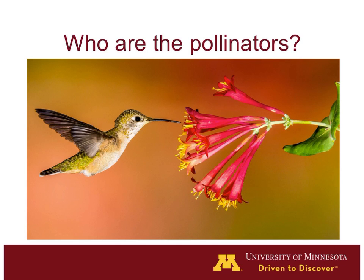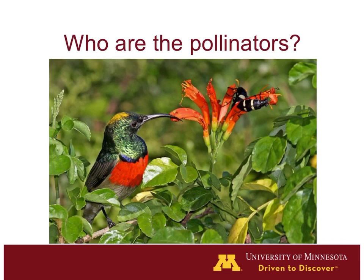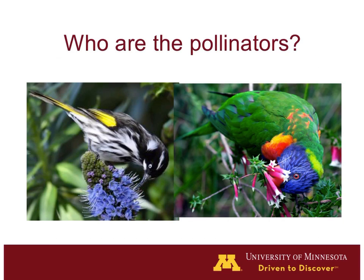There are a number of other bird species that do pollination throughout the world. One of these are the sunbirds of Africa, which have a very similar life history to hummingbirds but are quite different in evolutionary terms, and they are important pollinators of a number of plants in Africa. In Asia and Australia, we get honey eaters and lorikeets, which are also important pollinators on those continents.